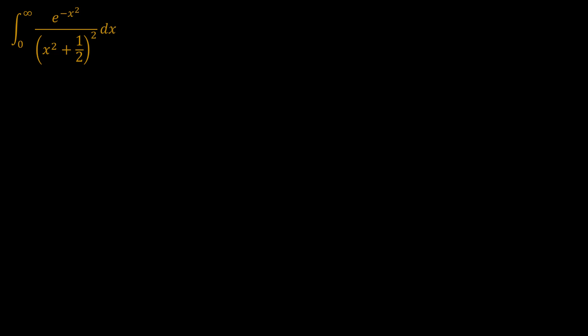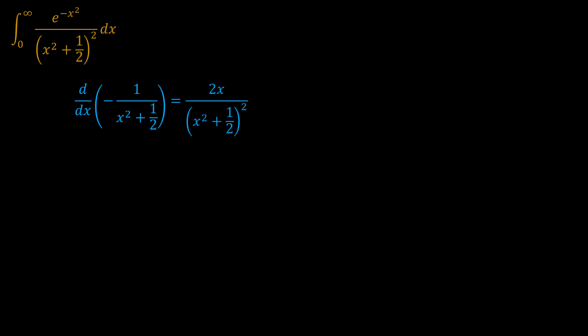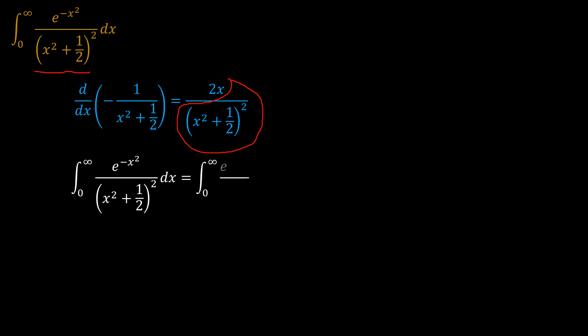The first thing that popped out when I looked at this problem was that the derivative of negative 1 over (x squared plus one half) is the same as 2x over (x squared plus one half) squared. So this part is very similar to the denominator in our integral, and our problem can be expressed as the integral from 0 to infinity of e to the power negative x squared over 2x, times that derivative.